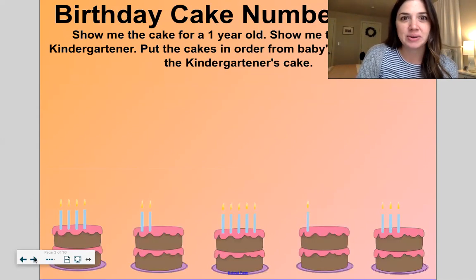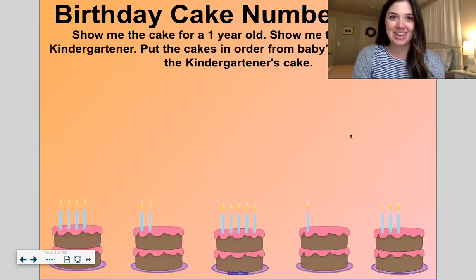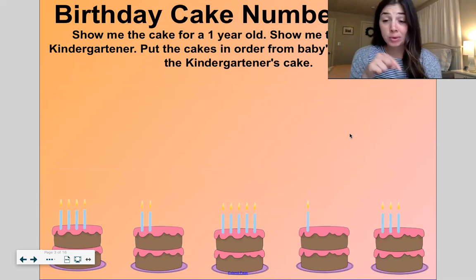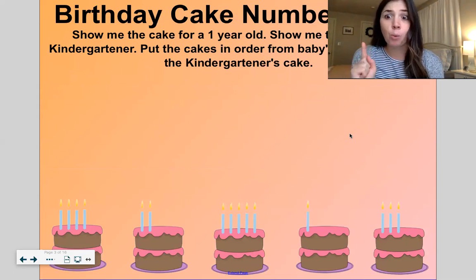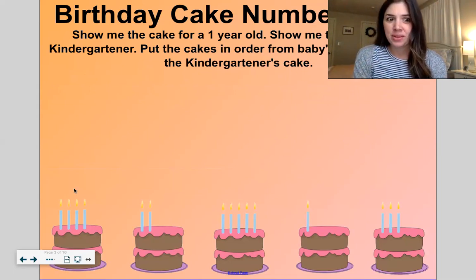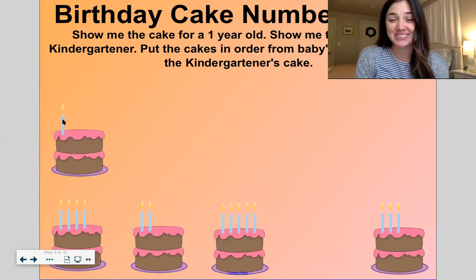All right, let's move on to our next fluency warmup. Another birthday cake. So normally on a birthday cake, candles will show how old you are. So show me the cake for a one-year-old. Is it the first one, the second one, the third one, the fourth one, or the fifth one? The fourth one. Yes, this one right here.